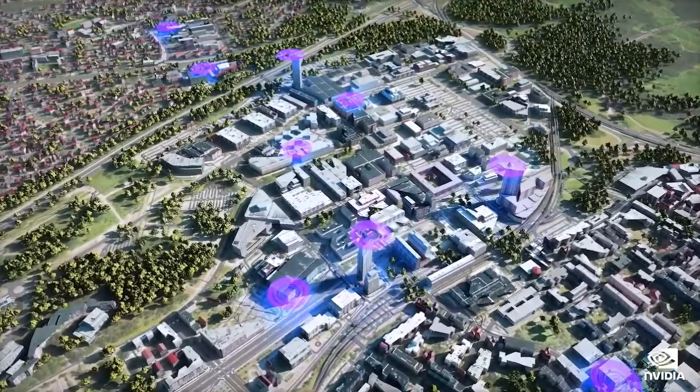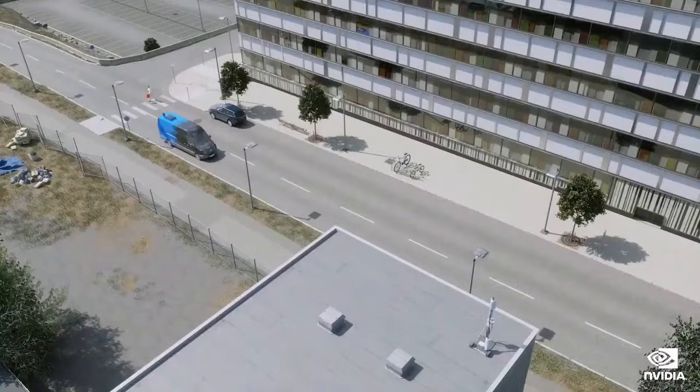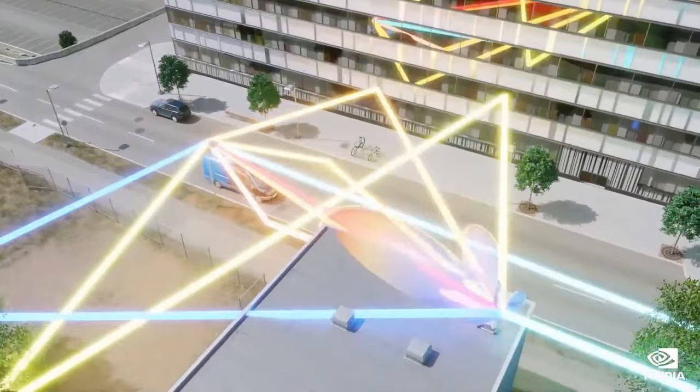Someday, that fleet of antennas will use AI to learn the best beamforming and signal strengths to optimize the quality of service and throughput in the city while conserving energy. Omniverse, as you can see, is a foundational platform for digital twin virtual worlds where AI systems are created. Let's talk about building AI models and systems.